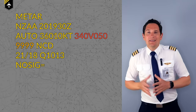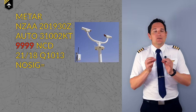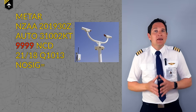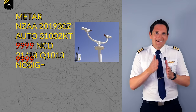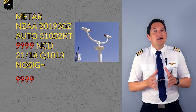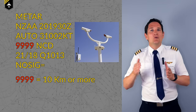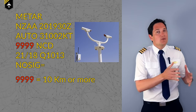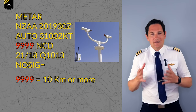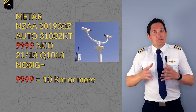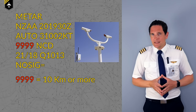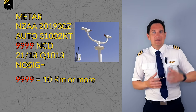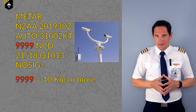Following the wind speed is the visibility. This number varies widely around the world depending on the system of measurement used by the country. Here we have 9999 which means a visibility of 10 kilometers or more. Note that while 8,000 would mean 8,000 meters or 8 kilometers and 4,000 would mean 4 kilometers, small domestic airports with lots of VFR traffic will often specify visibility out to much greater ranges of up to 50 kilometers, since it is more important for VFR pilots to know.